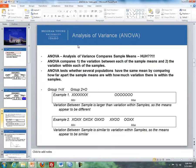ANOVA is the Analysis of Variance that compares sample means. So why is it called Analysis of Variance when we're comparing sample means? ANOVA compares the variation between each of the sample means and the variation within each of the samples. ANOVA tests whether several populations have the same mean by comparing how far apart the sample means are with how much variation there is within the samples.